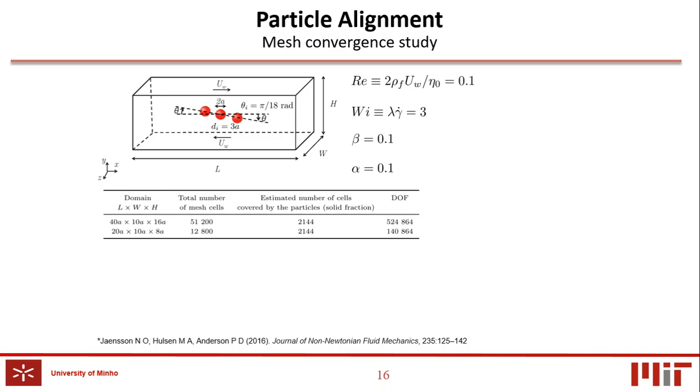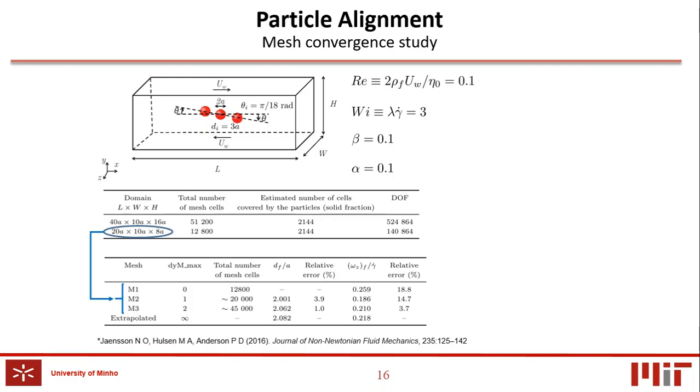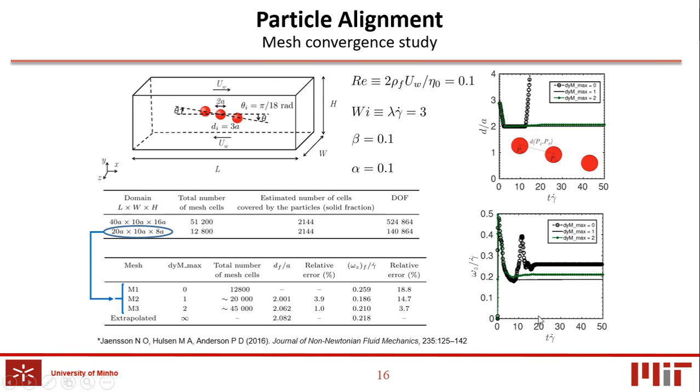Two different blockage ratios were considered, 2A over H equals to 1 over 8 and 2A over H equals to 1 over 4. We start by investigating the mesh convergence in the smaller domain, with three different meshes, which have maximum dynamic mesh refinement levels of 0, 1 and 2. The distance and angular velocity were plotted as a function of strain, as shown in the figures on the right. And the final values of these variables were extrapolated to an infinitely refined mesh using Richardson extrapolation technique. It was found that mesh 2 appears to be appropriately accurate with relative errors of 1% and 3.7%.